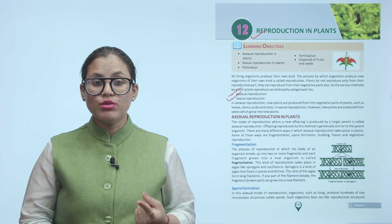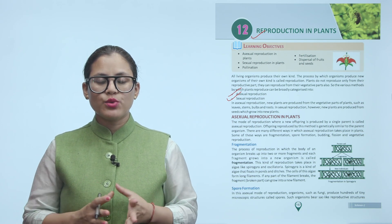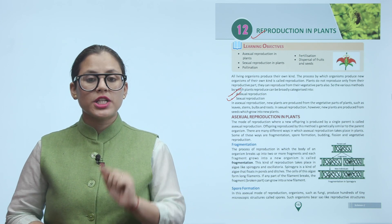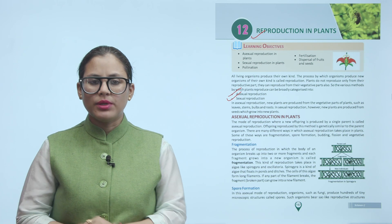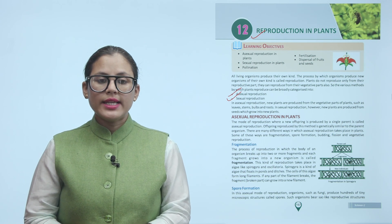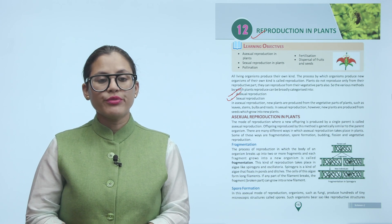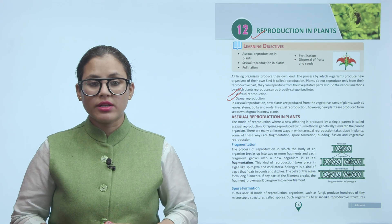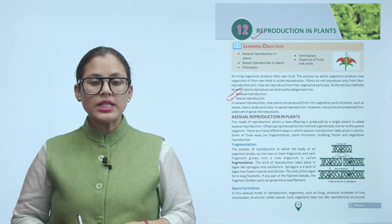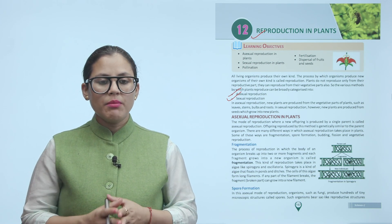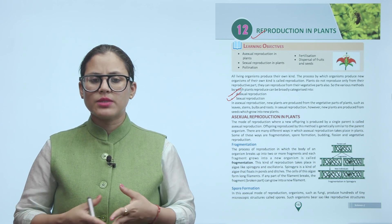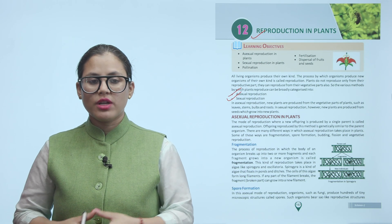In asexual reproduction, new plants are produced from the vegetative parts of the plant, such as leaves, stems, bulbs, and roots. In sexual reproduction, new plants are produced from seeds. Asexual reproduction is the mode where a new offspring is produced by a single parent. The offspring produced by this method is genetically similar to the parent organism. Some ways asexual reproduction takes place in plants include fragmentation, spore formation, budding, fission, and vegetative reproduction.